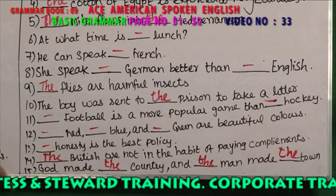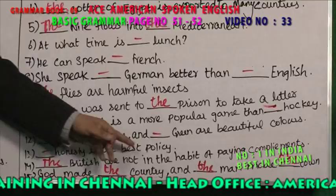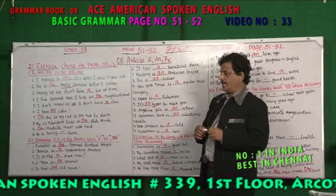God made the country and the man made the town. So 'the country' here means the village. Dear friends, hope you are able to understand where to use 'a,' where to use 'an,' and where to use 'the.'